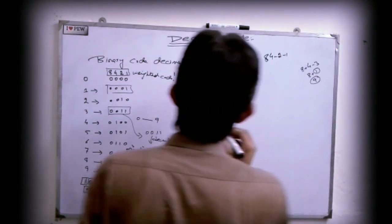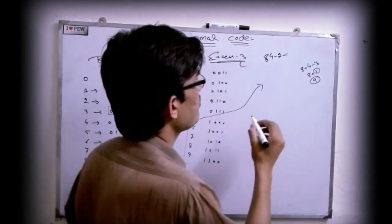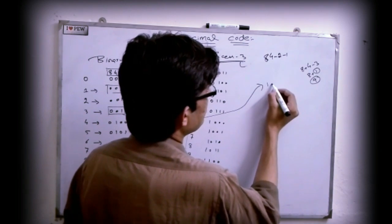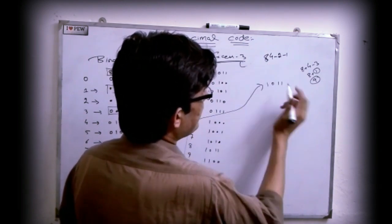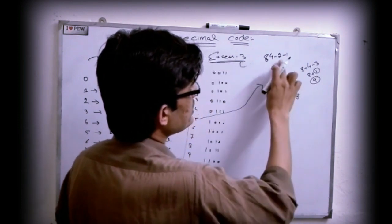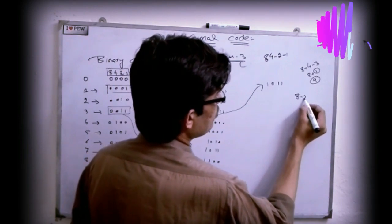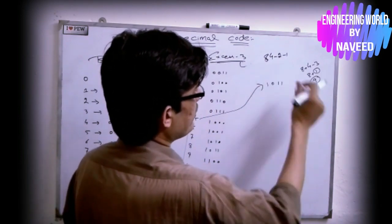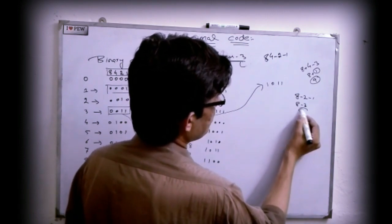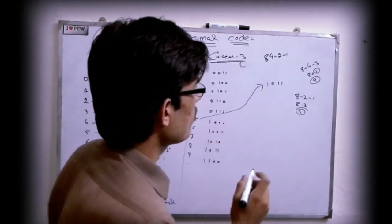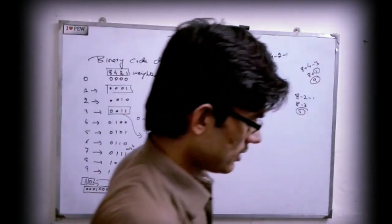For example, if I want to represent 5 in the 8, 4, minus-2, minus-1 code, I own the 8 position and also the second binary digit which is minus-2, and the first binary digit which is minus-1. Simplifying: 8 minus 2 minus 1 equals 5. So I represent 5 in this binary code with the decimal code 8, 4, minus-2, minus-1.